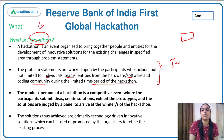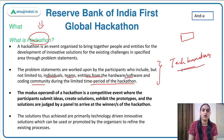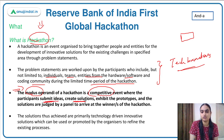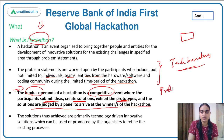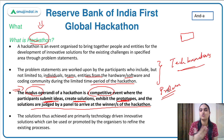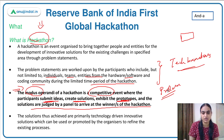Usually, tech innovators are invited to come up with solutions to solve problems existing in any kind of system. It's a competitive event where participants submit their ideas, create solutions, and exhibit prototypes. Solutions are judged by a panel to arrive at the winner. People come up with different ideas and solutions; whichever solution is the best, they develop a prototype of that product model, and then the panel of judges decides which was the best solution.